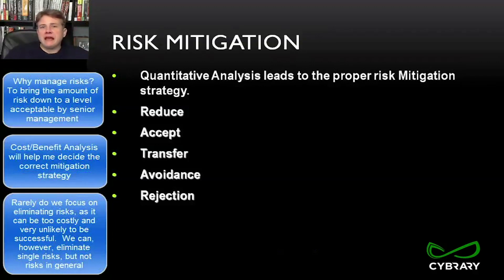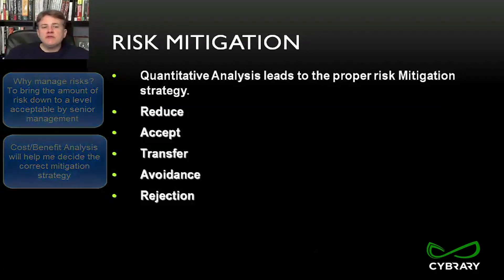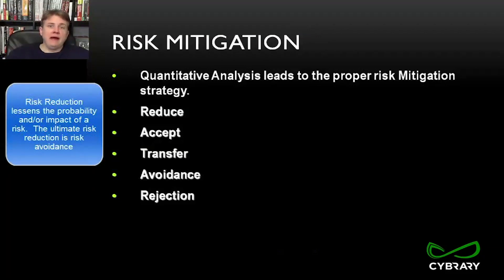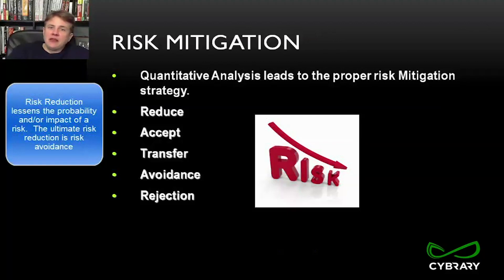When we look at risk mitigation, there are generally three basic ways we consider: reduce, accept, and transfer — risk reduction, risk acceptance, and risk transference. When we talk about reducing a risk, we're talking about lessening the probability and/or impact of a risk. I can't lessen the probability of rain, but I can bring an umbrella and lessen its impact. We're bringing either probability or impact, or ideally both, down to that tolerable level.